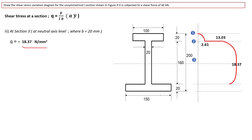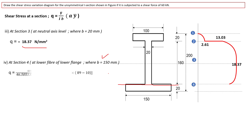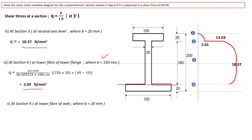At Section 4 — at the junction where the web meets the bottom flange — when considering the section lying in the flange, the width is taken as 150 mm (bottom flange width). After putting in all values, the shear stress at this level is 2.04 N/mm². Just above this junction in the web portion, using B = 20 mm, the shear stress comes out to be 15.28 N/mm².